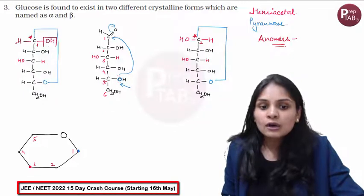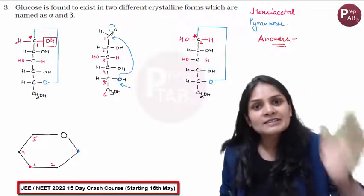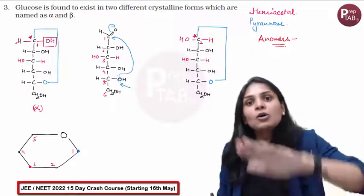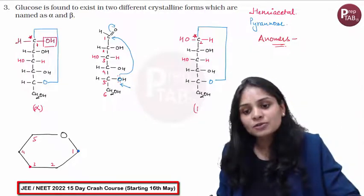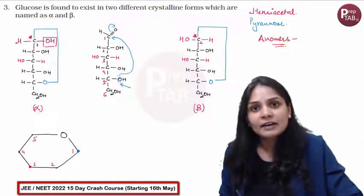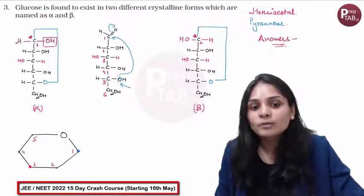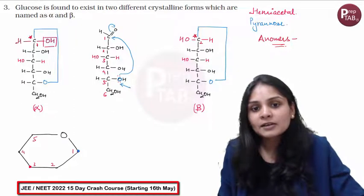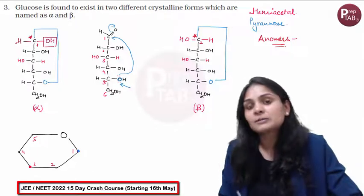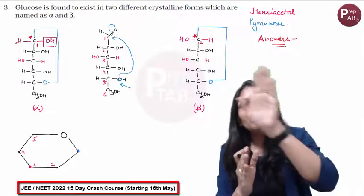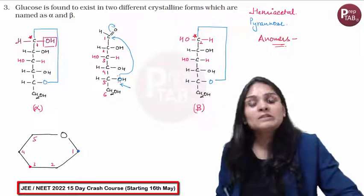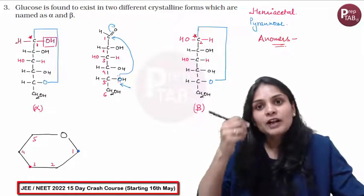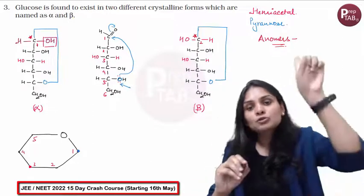Anomers differ in the carbon configuration at the anomeric center. If the OH is on the normal side — the right side — it is called alpha. And if OH is on the abnormal side, it is called beta. In cyclic forms drawn as Haworth projections: if OH is on the normal side, you draw it pointing down. If it is on the abnormal side, you draw it pointing up.